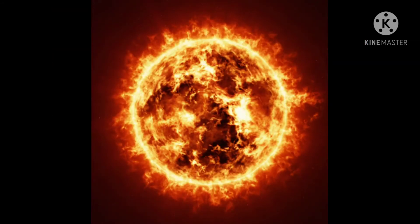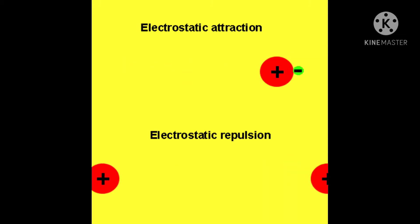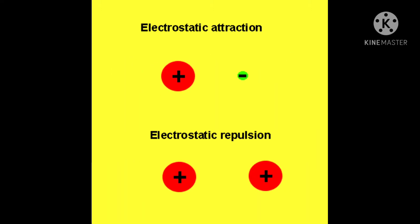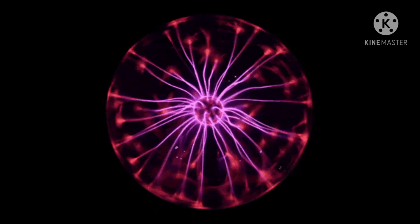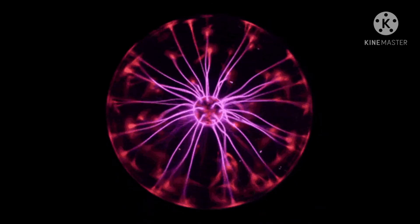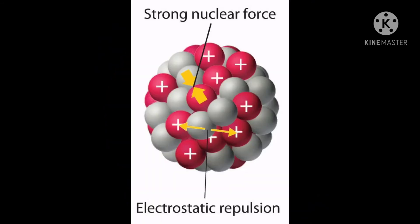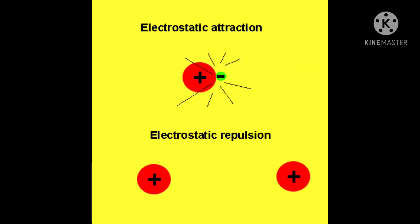For the nuclei to fuse together, a way must be found to overcome the mutual electrostatic repulsion or Coulomb repulsive barrier between the proton clouds of the two nuclei. This could be done by heating the matter to such a high temperature, approximately 10 million degrees Celsius, that the thermal velocity imparted to the nuclei is sufficient to overcome the mutual electrostatic repulsion.